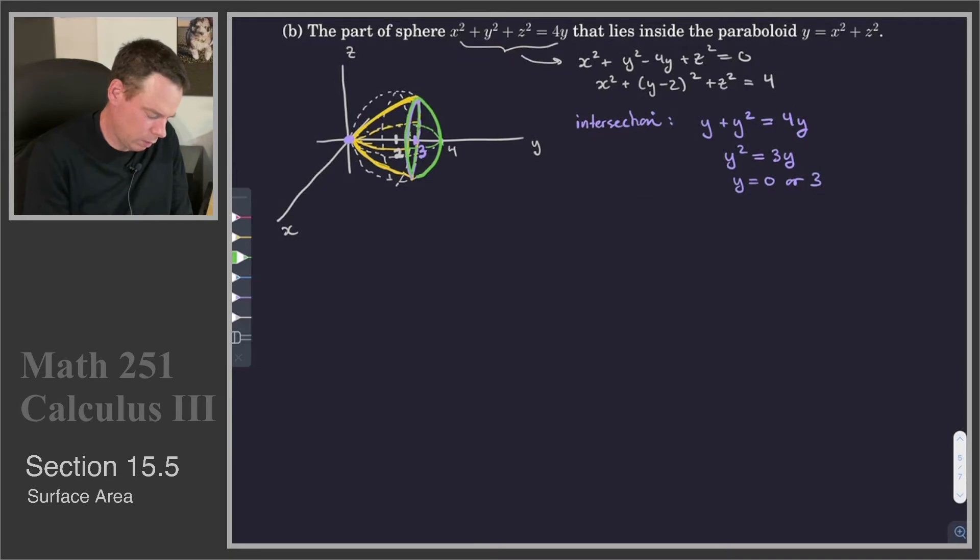Okay, so what we'll do is we will set up everything as if y was a function of x and z. So we'll look at everything as the inputs are coming from the x, z plane, and the outputs are along the y-axis. So in this case, I'm looking at this as y is a function of x and z. So for my sphere, if I continue on with this, I get that 4 minus x squared minus z squared square rooted plus 2 is equal to y.